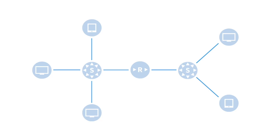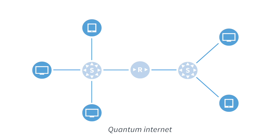The first element of a quantum internet is what we call an end node. An end node is basically your computer, laptop, or phone that is attached to the internet and that you use in order to run applications. So you need the end node in order to use the quantum internet. On a quantum internet we will not use normal laptops, cell phones, or computers, but instead we will use quantum computers.